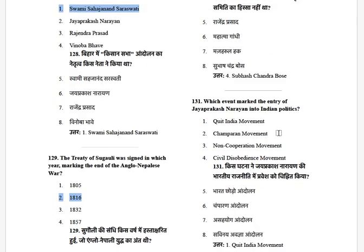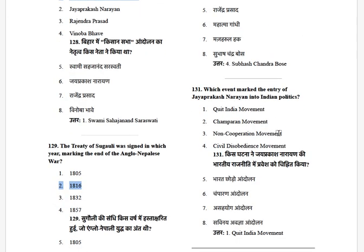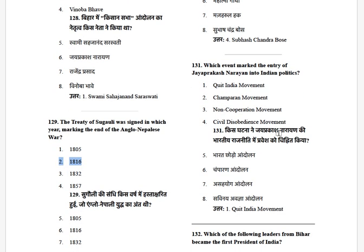Which event marked the entry of Jayaprakash Narayan into Indian politics? The options are: Quit India Movement, Champaran Movement, Non-Cooperation Movement, and Civil Disobedience Movement. The answer is the Quit India Movement.